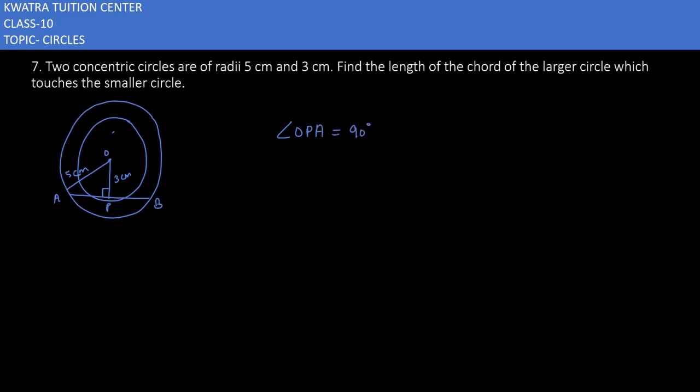First of all, then if angle OPA is 90, then you can use Pythagoras theorem. And in this triangle, in triangle OPA, you can easily find the value of AP. Because you have a hypotenuse, you have a perpendicular, you have a base.